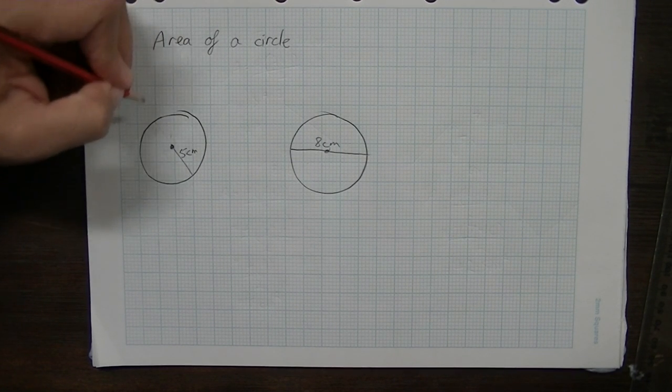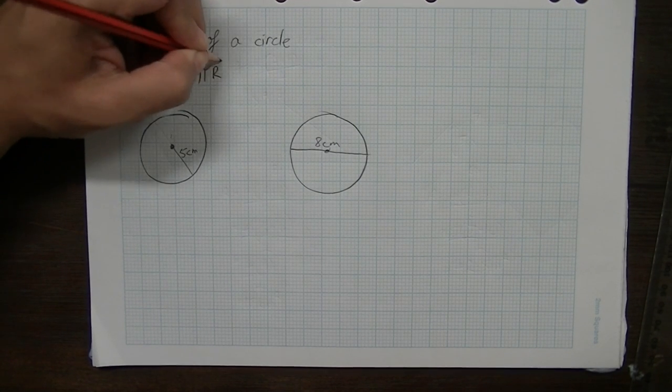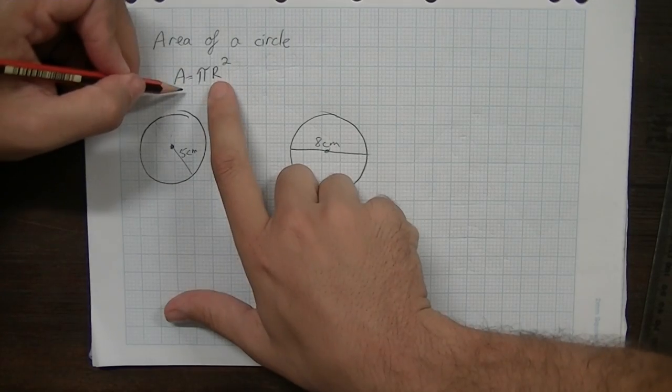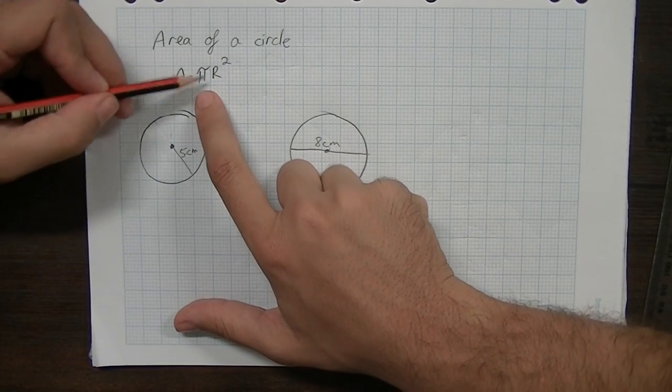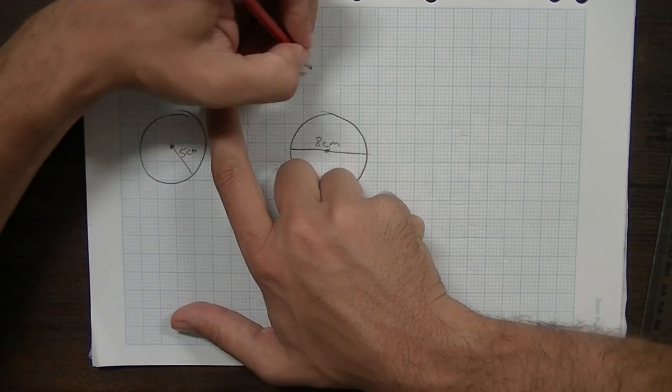What we're looking at is area equals pi r squared. Now, pi, that's simple enough. That's 3.14159, etc. The r stands for radius.